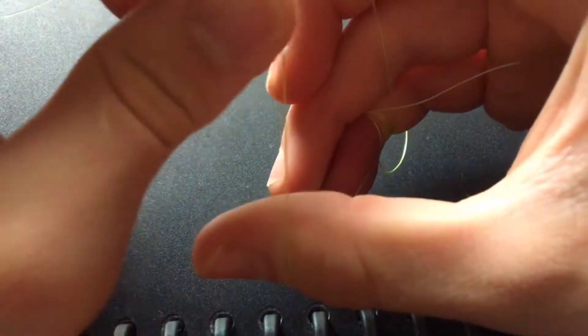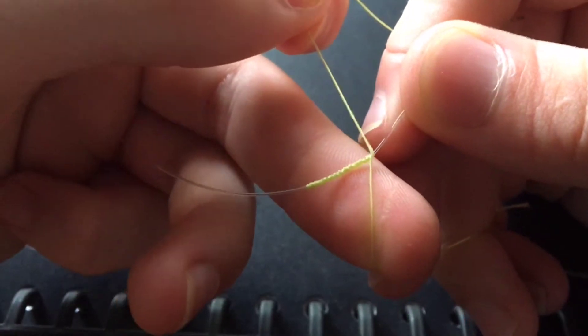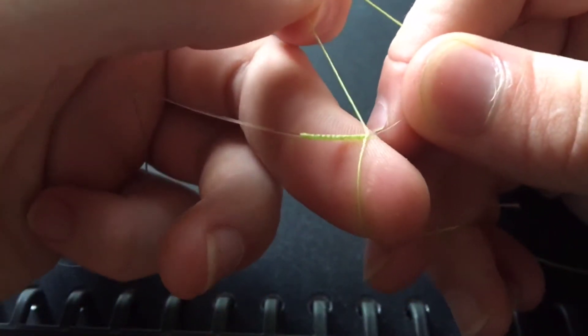Once you've got about 20 of those wraps, you can take the line off your pinky after it's lost circulation. You don't want to do it too tight obviously.